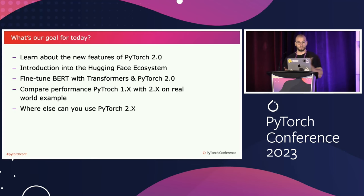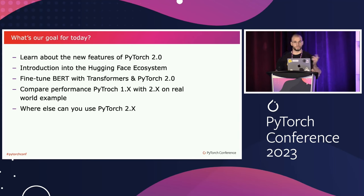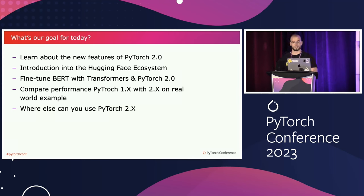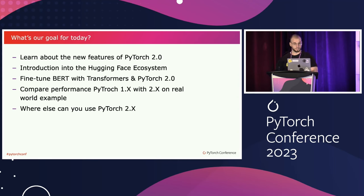Our goal for today is to learn about the new features of PyTorch 2.0. We heard about features from PyTorch 2.1 this morning. We will take a quick look at the HuggingFace ecosystem, then see how we can fine-tune BERT with Transformers and PyTorch 2.0, compare performance of PyTorch 1.0 versus PyTorch 2.0 on a real-world example, and look at additional insights on where else you can use PyTorch 2.0 in the HuggingFace ecosystem.